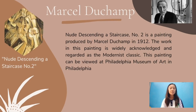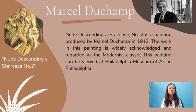Marcel Duchamp was a painter, sculptor, chess player, and writer — one of the most influential modernist artists whose ideas and use of media opened the way for much contemporary art. 'Nude Descending a Staircase No. 2' is a painting produced by Duchamp in 1912, widely regarded as a modernistic classic. At its first presentation at the Parisian Salon des Indépendants, it was rejected by the Cubists, and caused a huge stir during its exhibition at the 1913 Armory Show in New York. The work is now in permanent exhibition at the Philadelphia Museum of Art.